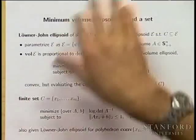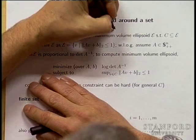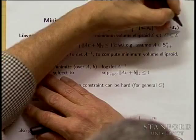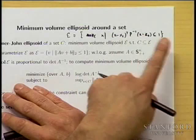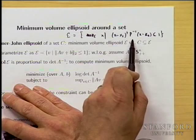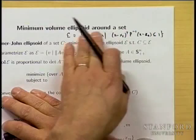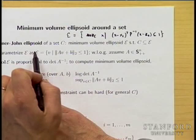Which parametrization you use to describe an ellipsoid will completely change the convexity properties of the problem. If we parametrize as {x : (x - x_c)^T P^{-1} (x - x_c) ≤ 1}, described by center x_c and positive definite matrix P, this will lead to a non-convex problem for the Löwner-John problem. Using the inverse image parametrization instead will give a convex problem.